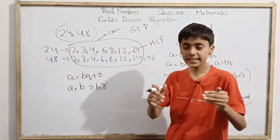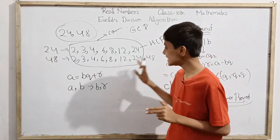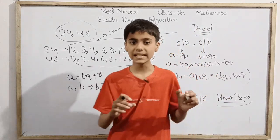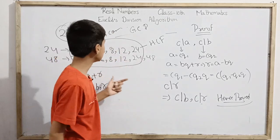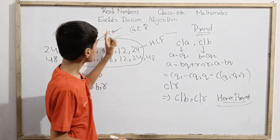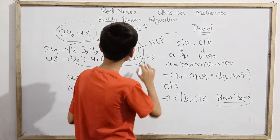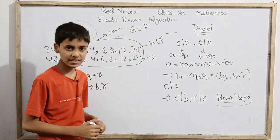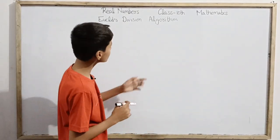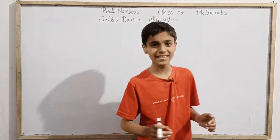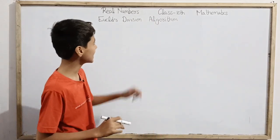Those were the basics and foundations required to study Euclid's Division Algorithm. The real thing hasn't started yet. Now we will discuss what exactly is Euclid's Division Algorithm. This term algorithm is basically derived from the 9th century Persian mathematician Al-Khwarizmi's name.